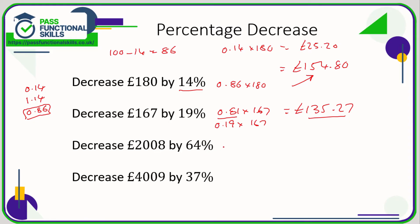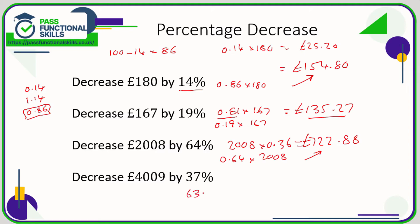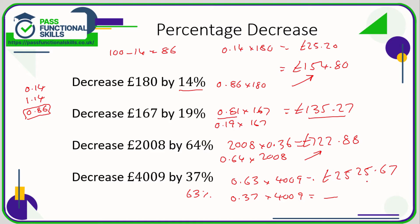If something falls by 64%, that means you need to work out 36% of the original amount. So 2008 times 0.36 comes to 722 pounds 88p. Alternatively, work out 64% of 2008 and subtract it from 2008. If something is decreasing by 37%, we need to work out 63% of what it was originally. 0.63 multiplied by 4009 comes to 2525 pounds 67p. Alternatively, work out 37% using 0.37 times 4009 and subtract it from 4009.